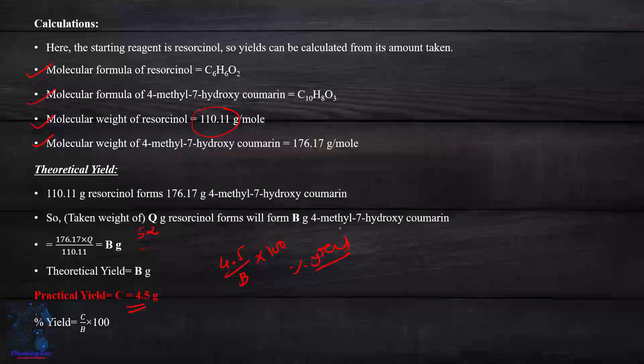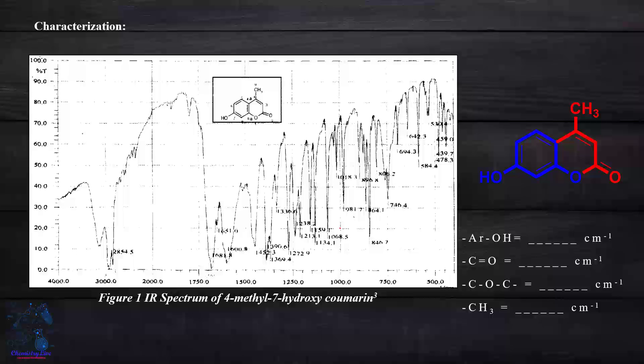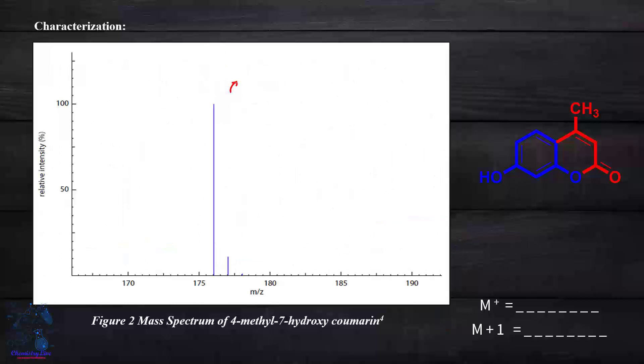The next slides are important for characterization. First is IR, published in a journal with reference number. Here you see 2854.5 cm⁻¹, there's one IR peak, and another peak in the aromatic region. You have to identify that IR with OH, C=O, COC and C=C stretching vibration frequencies. In mass spec, there's 176 m/z denoted as M plus and 177 as M plus one. Two mass peaks available: 100% relative intensity and 20% relative intensity.